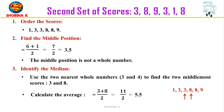In this case the middle position is not a whole number. When the middle position is not a whole number, look at the two nearest whole numbers on either side of it. Here, take the values at positions 3 and 4 in the ordered list, which are 3 and 8.